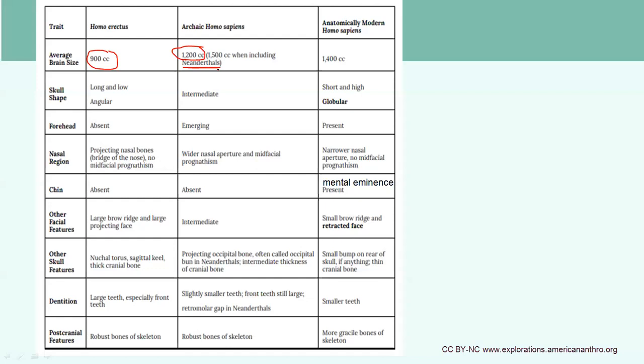Modern Homo sapiens have right around 1,400 cubic centimeters on average. An interesting thing is that the forehead is starting to emerge in these species, meaning the cranium is elevating above the brow ridges rather than going straight back. That's because we see development and increase in brain size, specifically of the frontal lobe, which is associated with important decision making, critical thinking, and higher-order thinking.